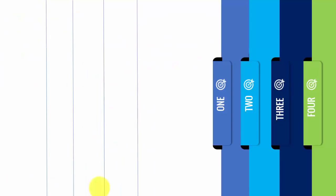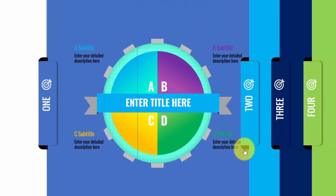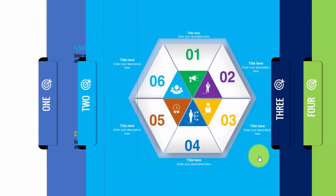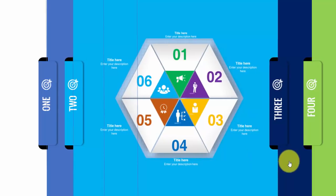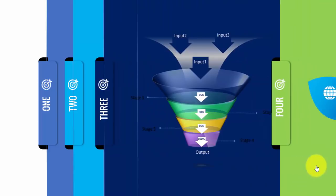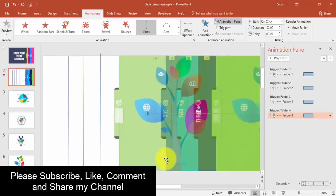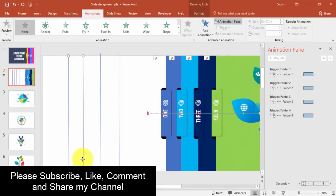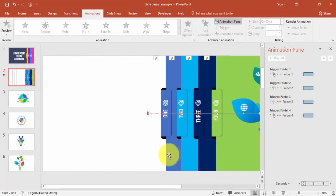Let's play now. You can see the hand cursor appears. Click — folder one moves. Click — second. Click — third. Click — fourth. Now it's time to remove the guide lines — just select them and press Delete.